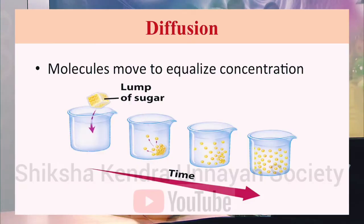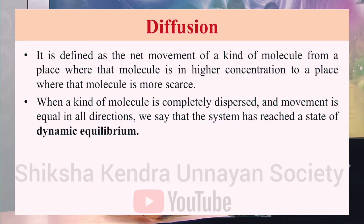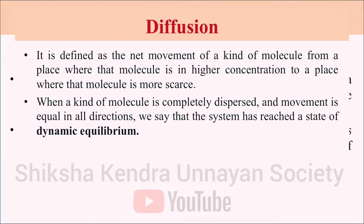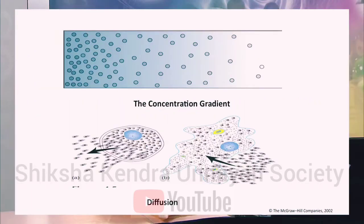In diffusion, each molecule has its own kinetic energy, causing it to move from higher concentration to lower concentration. For example, if a sugar cube is placed in a glass of water, the sugar molecules start moving and spread out until they are evenly distributed. After some time, all the sugar molecules mix into the water until equilibrium is obtained. When molecules are completely dispersed and movement is equal in all directions, this state is called dynamic equilibrium.